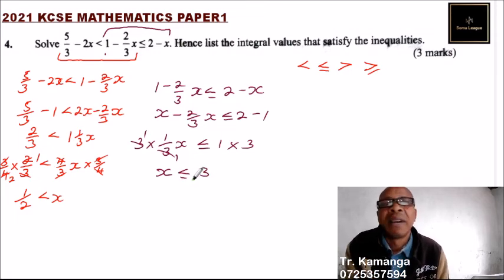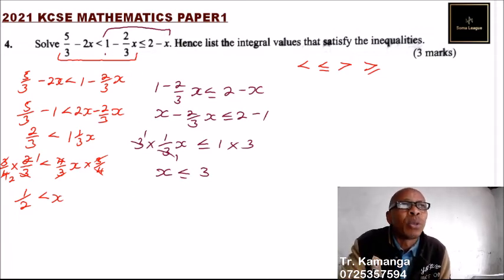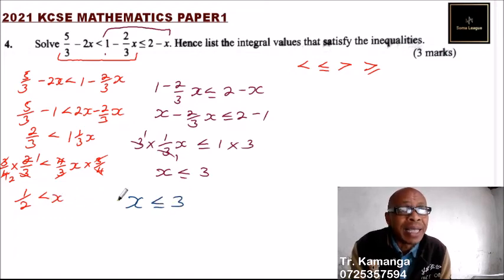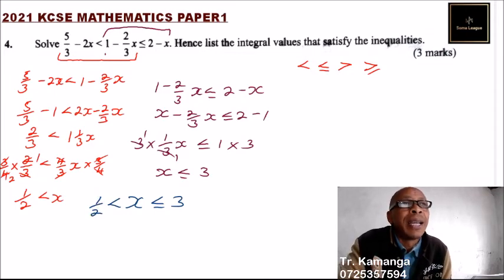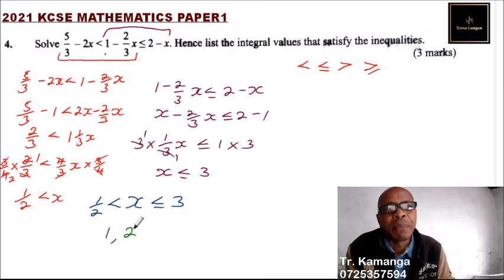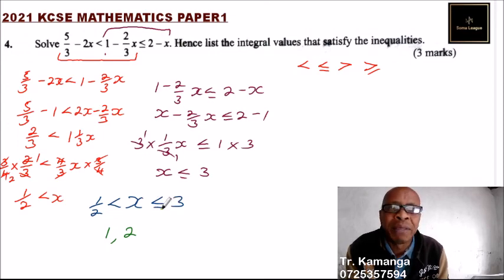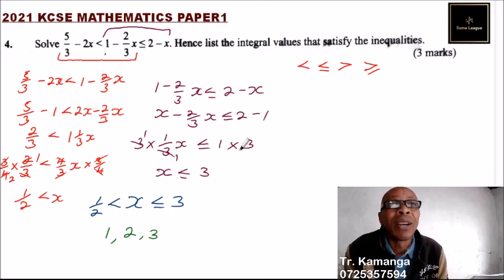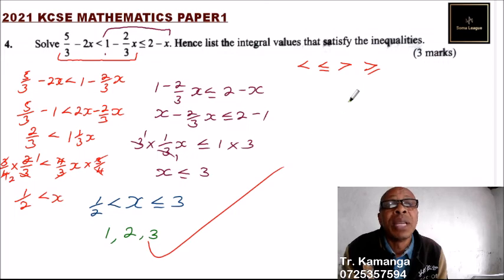So we have the two values of x. We combine them: x is less than or equals to 3 and x is greater than a half. Since x is greater than a half, the next integer is 1. Also 2 is part of x. And because x is less than or equals to 3 — we have an equal sign — 3 also qualifies. So the integral values are 1, 2, and 3, and you will be able to get 3 marks.